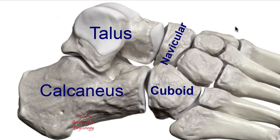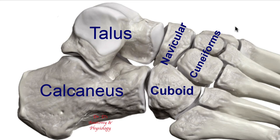The navicular bone articulates with three bones anteriorly which are called the cuneiforms, meaning shaped like a wedge. The stem of this word is used in other anatomical locations, like the cuneus in the brain.